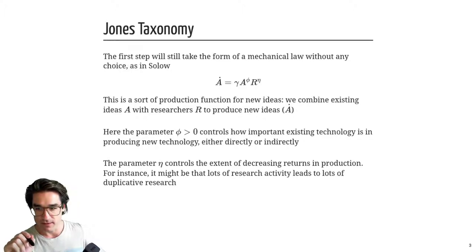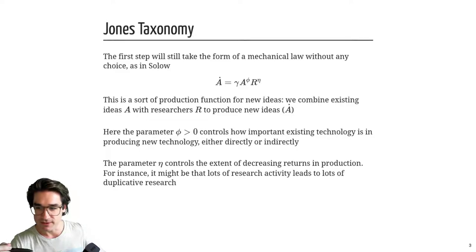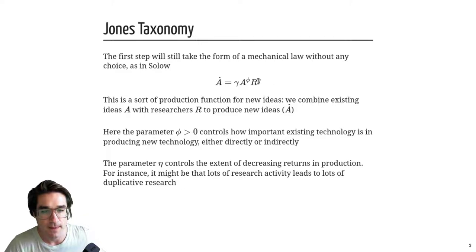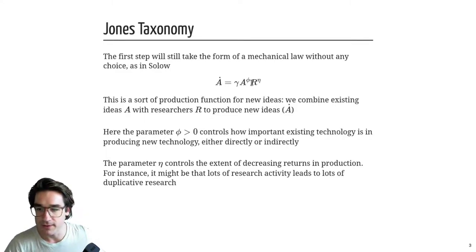R could be goods, labor like researchers, or capital of some sort — I'm being a bit abstract. But those are the two inputs. The parameters γ, φ, and η determine how each input contributes.